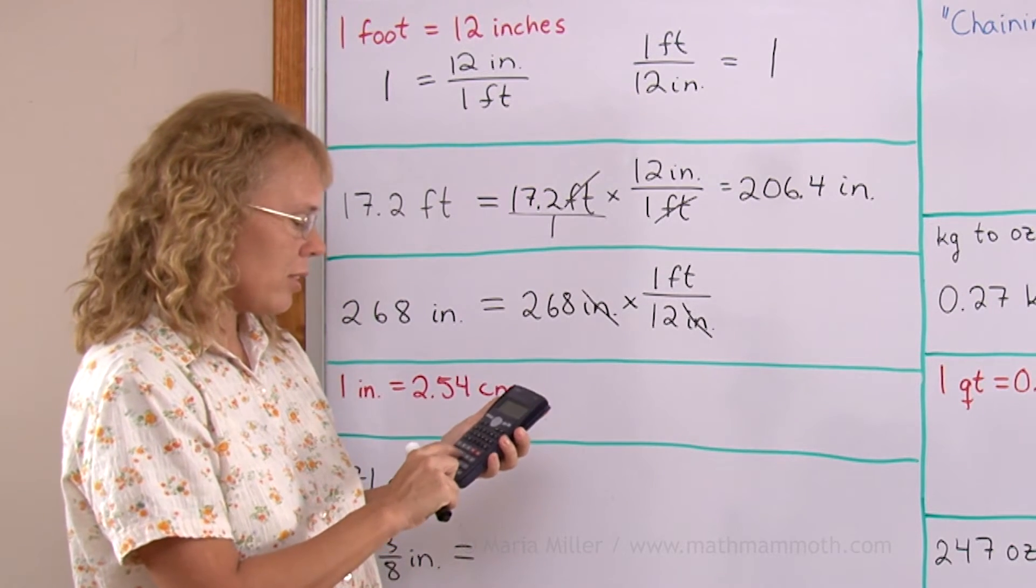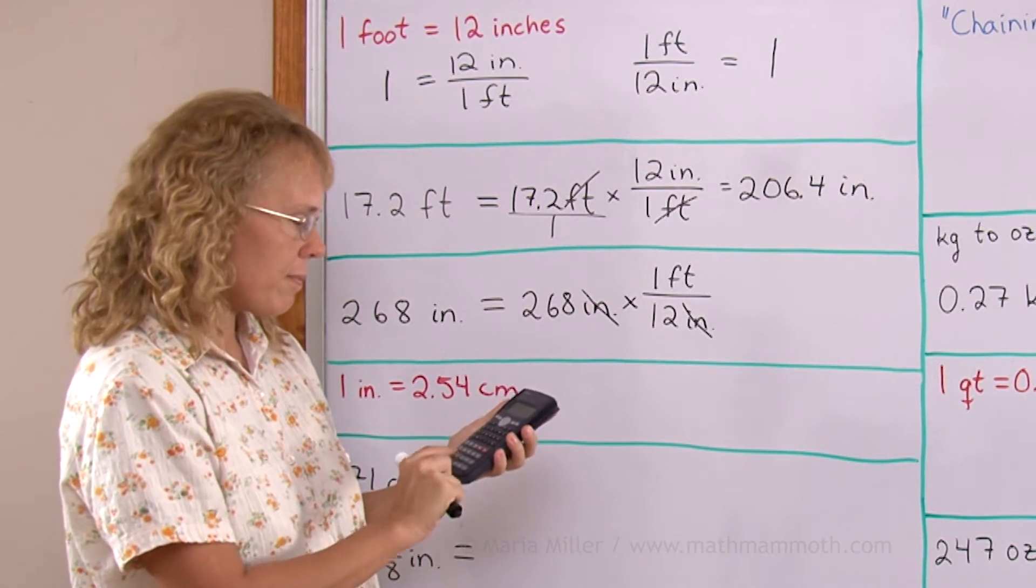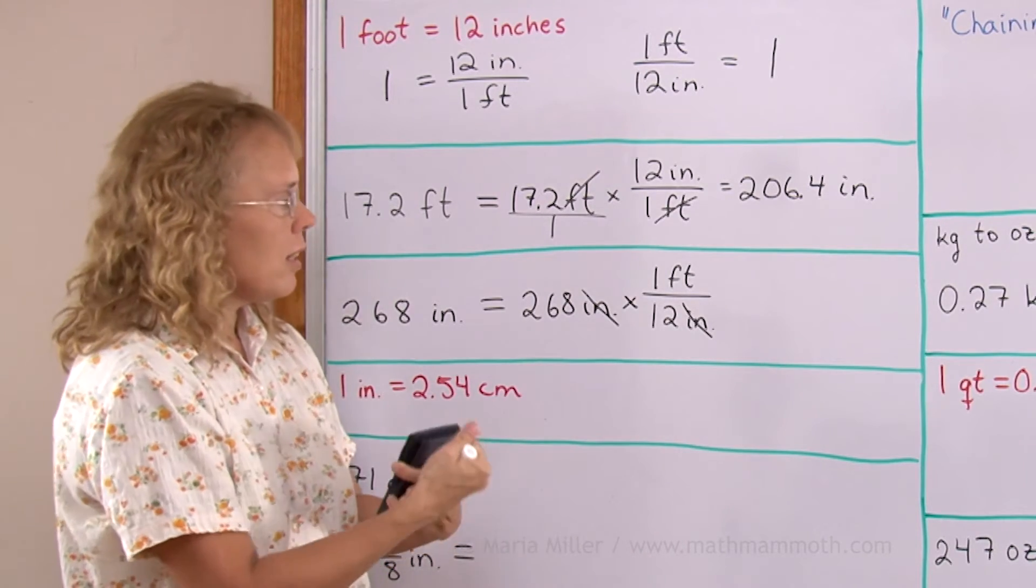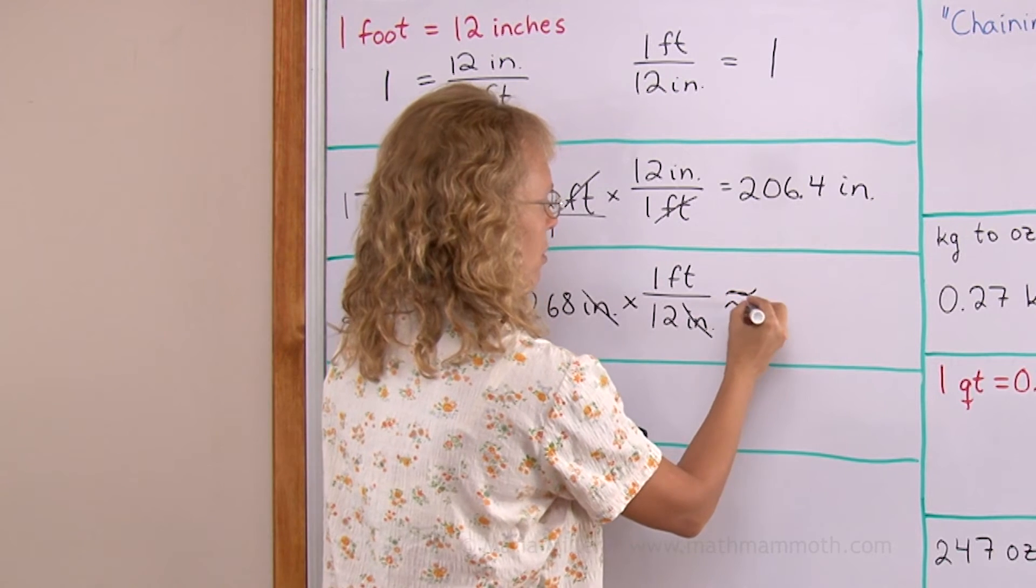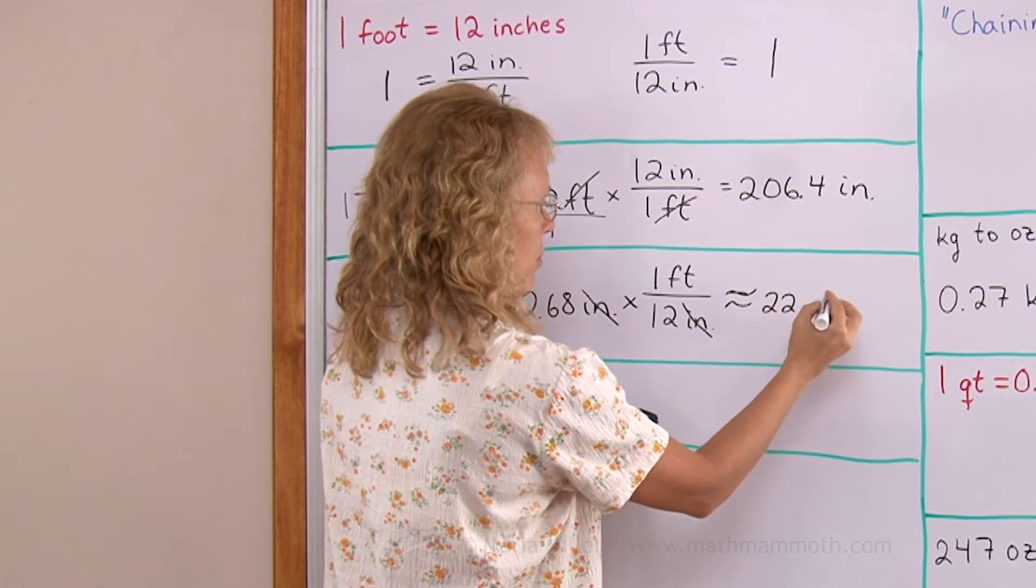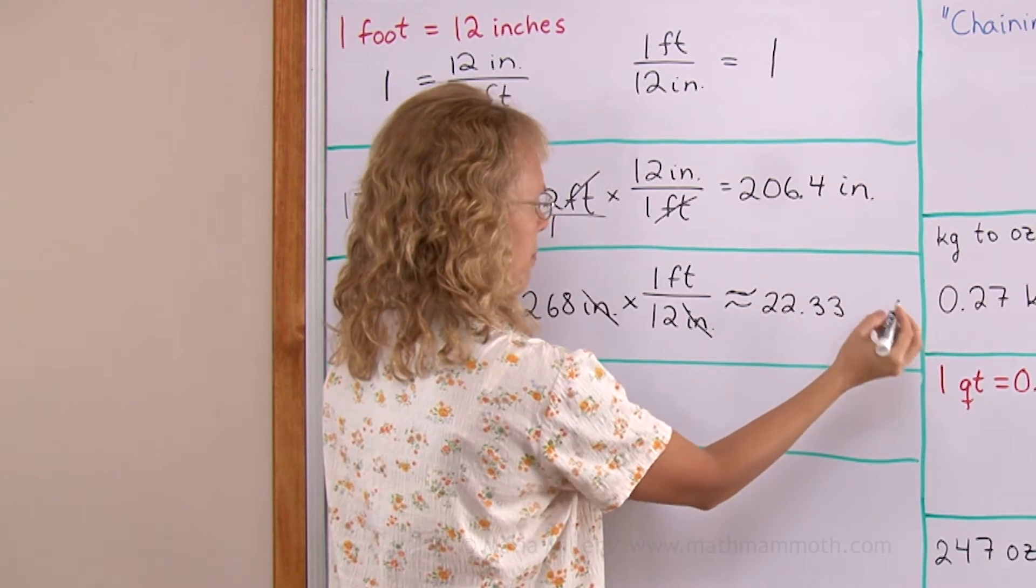Again with the calculator, it is 268 divided by 12. Times 1 doesn't matter. And this time I get, I have to round this, it is 22.33 feet. Actually exactly 22 and a third of a foot.